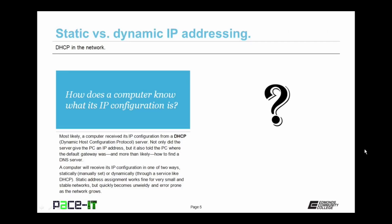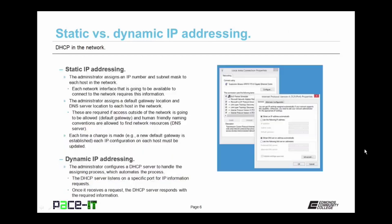Static IP address assignment works fine for very small and stable networks, but quickly becomes unwieldy and error-prone as the network grows. The administrator assigns an IP number and subnet mask to each host in the network, whether it be a PC, router, or some other piece of electronic equipment. Each network interface that is going to be available to connect to the network requires this information. The administrator also assigns a default gateway location and DNS server location to each host.